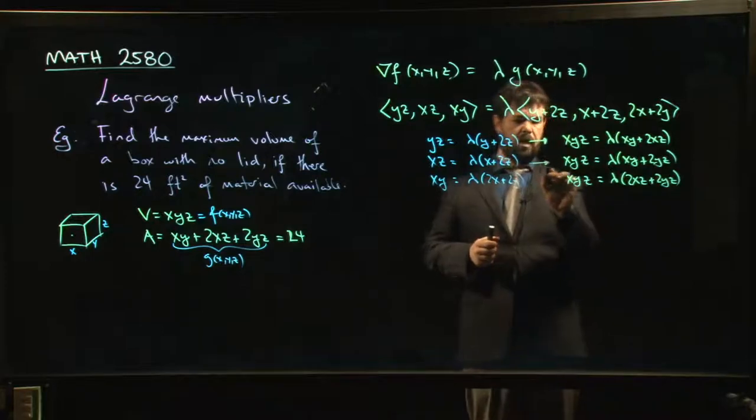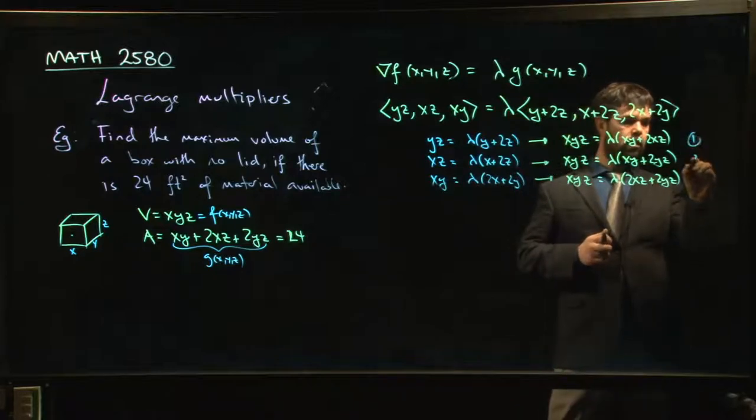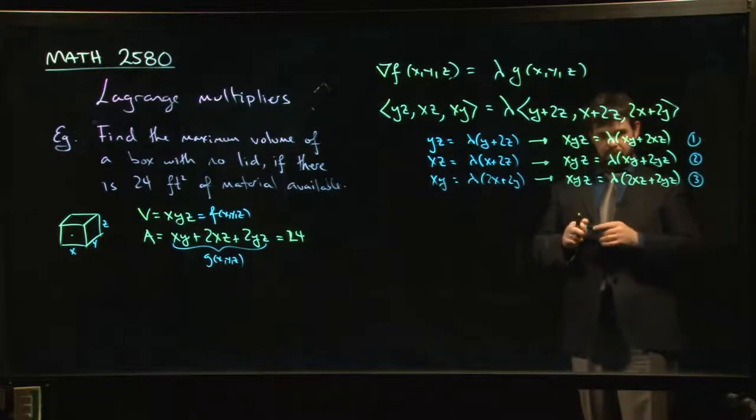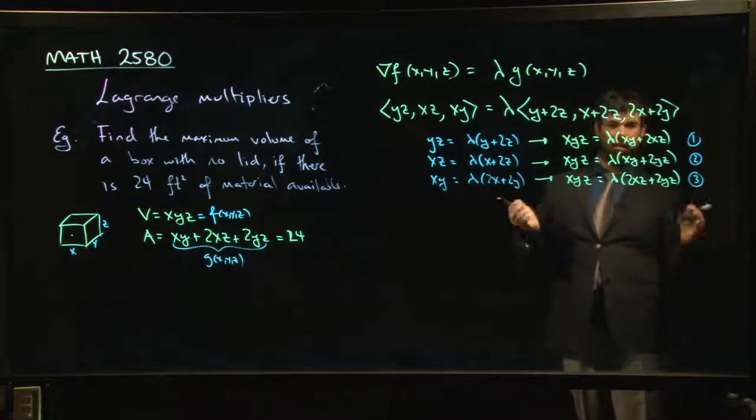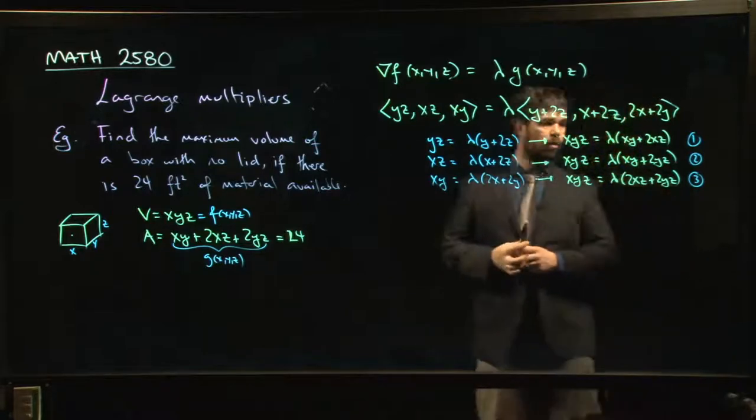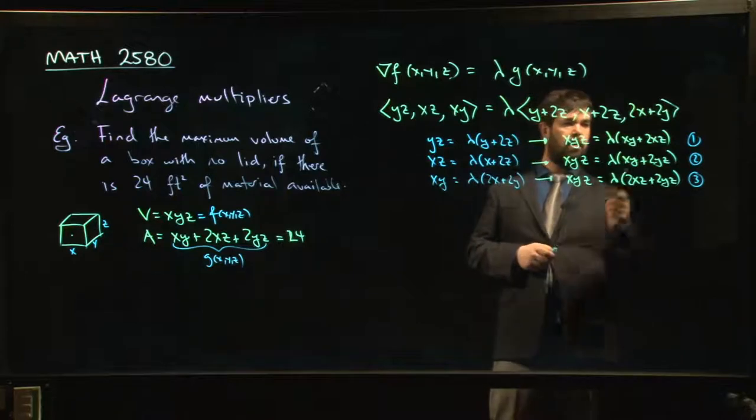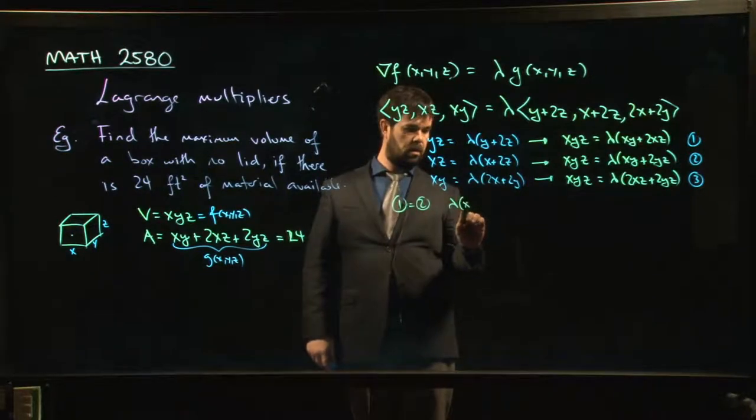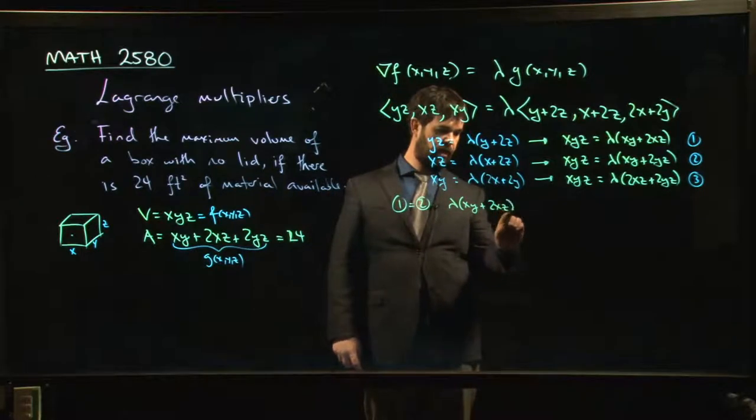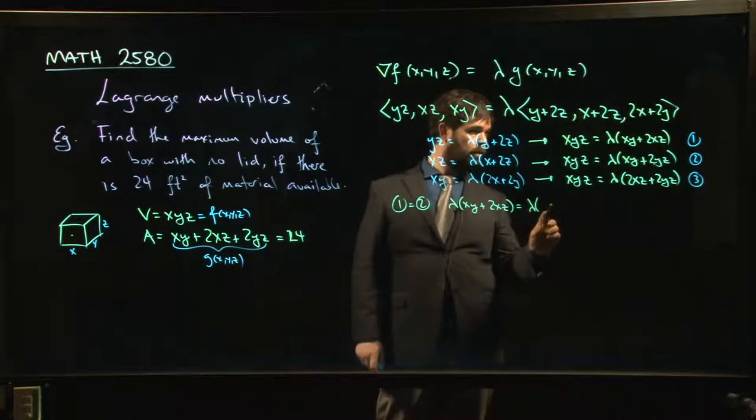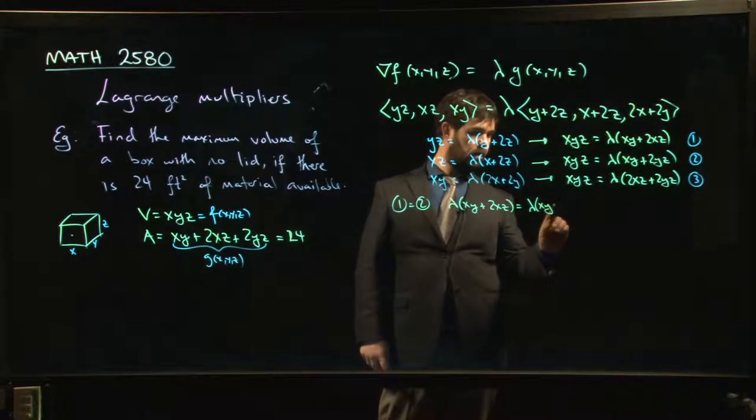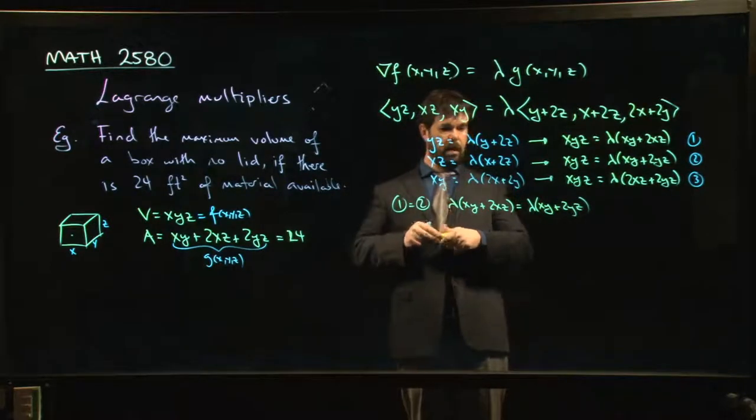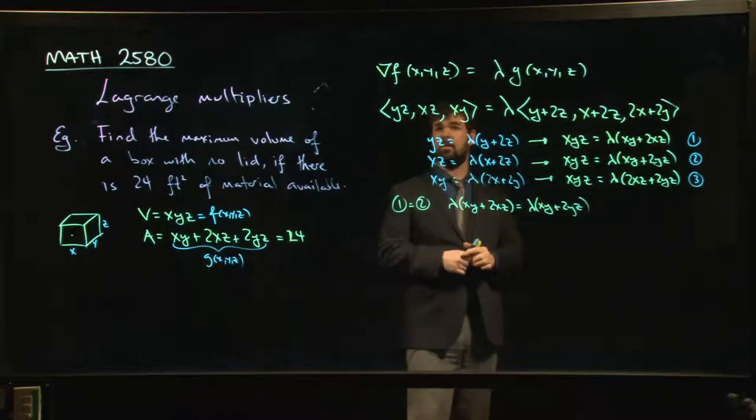Well, it kind of does, because we have these three equations now. One, two, three, and the left-hand side is the same for all three. That must mean that the right-hand sides are also the same. So we can start equating left-hand sides to right-hand sides and see if it gets us anywhere. Which two should we start with? Maybe we'll start by comparing one and two. So what happens when I set one equal to two? Well, then I get that lambda times xy plus 2xz is lambda times xy plus 2yz. Now what? Well, let's see. Lambda is common to both sides. Can I cancel it? I can cancel it as long as lambda is not zero. Do I know lambda is not zero?